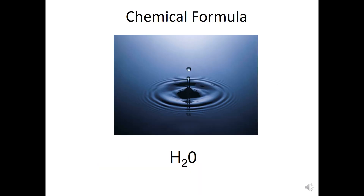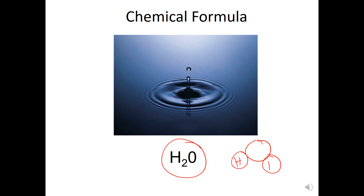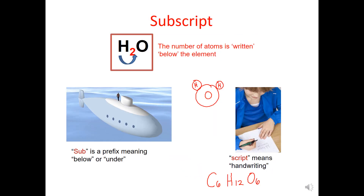Let's talk about chemical formulas. Scientists are lazy — just like with elements we use symbols instead of writing out the full name, for compounds we use formulas. For example, H2O tells me I have one oxygen and two hydrogens. The formula tells you how many atoms of each element you have.